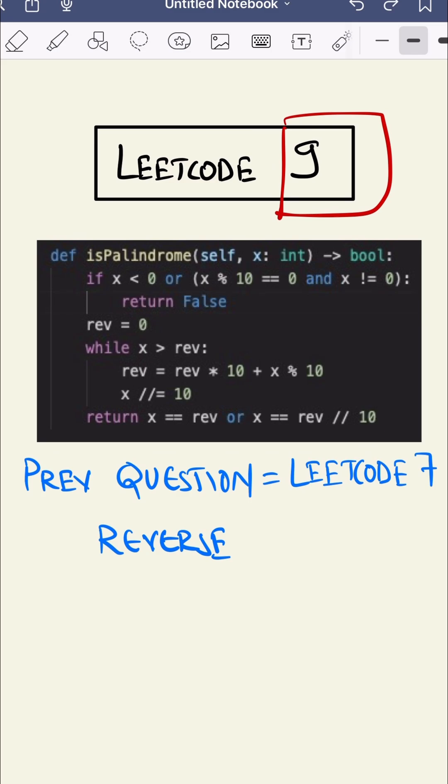Here we are just checking if the reverse is equal to the num or not. If it is, then we are returning true, else we are returning false.